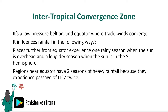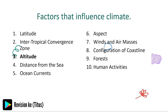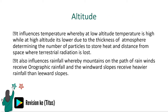We have the Intertropical Convergence Zone, or ITCZ — a low pressure belt between the equator where trade winds converge. It influences rainfall in several ways. Places further from the equator experience one rainy season when the sun is overhead and a long dry season when the sun is in the southern hemisphere. Regions near the equator have two seasons of heavy rainfall because they experience the passage of the ITCZ twice.